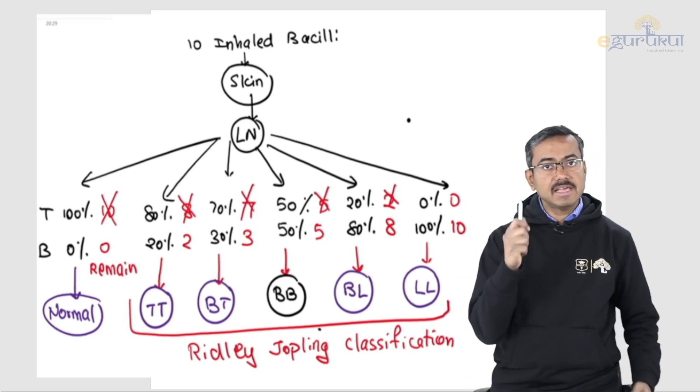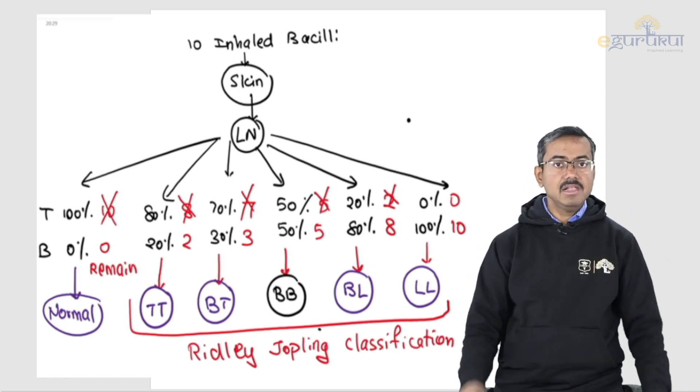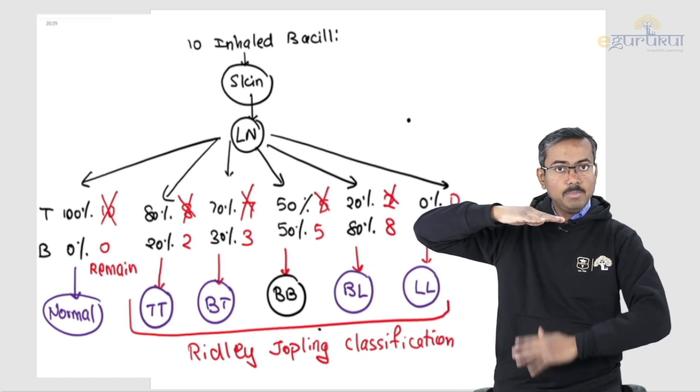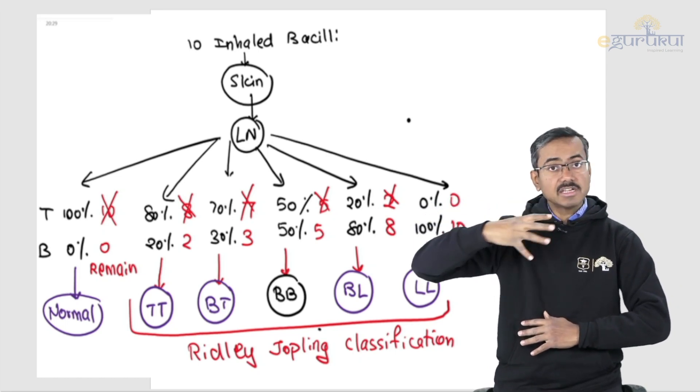So if you have 100% T cell and 0% B cell, so a lot of T cells. This hand is B cell. There is no B cell here. A lot of T cells. So that's a great response.